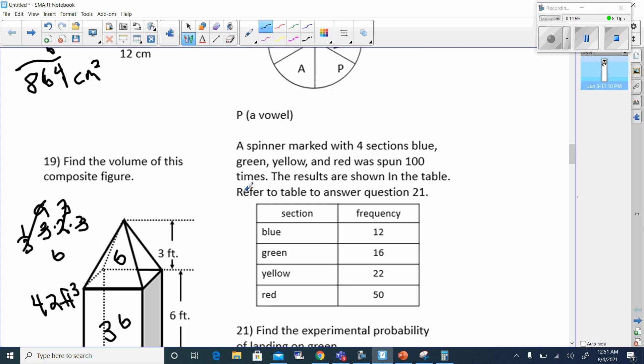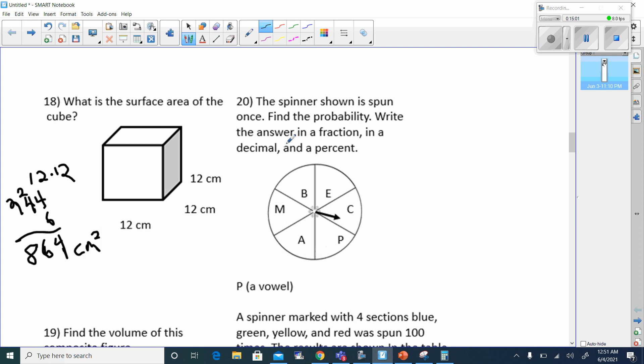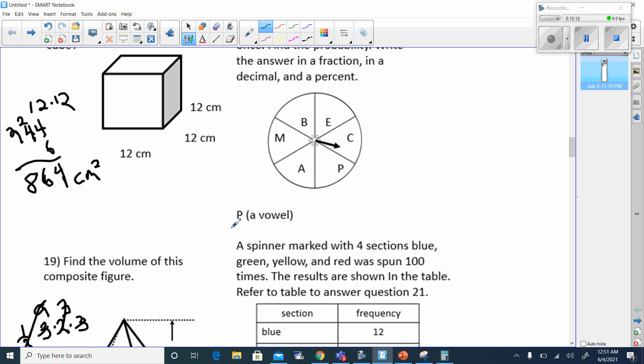Let's go to number 20. The spinner shown is spun once. Find the probability. Write the answer as a fraction. The probability of a vowel, there's one vowel and two vowels here, two vowels out of six possible things to land on. That's going to be reduced to one-third, because both of these are divisible by two. So my answer would be one-third.